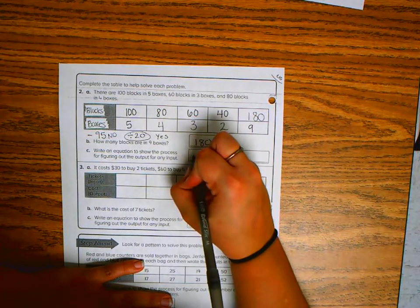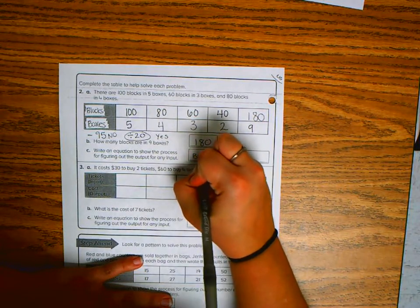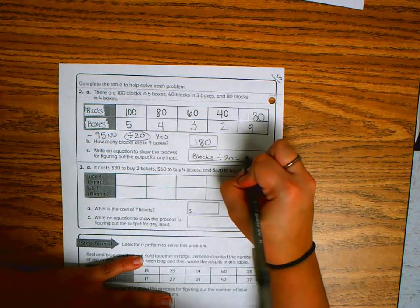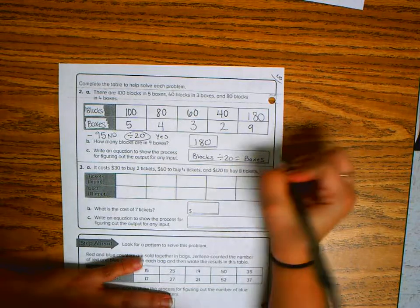My equation would be blocks divided by twenty equals the number of boxes that I need.